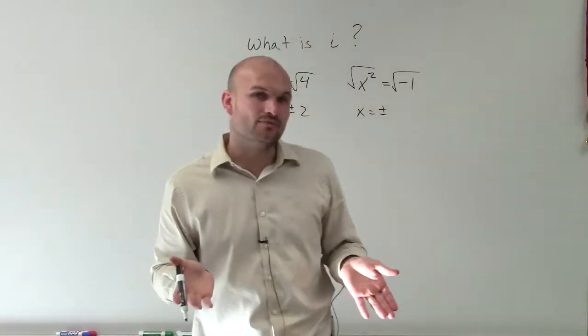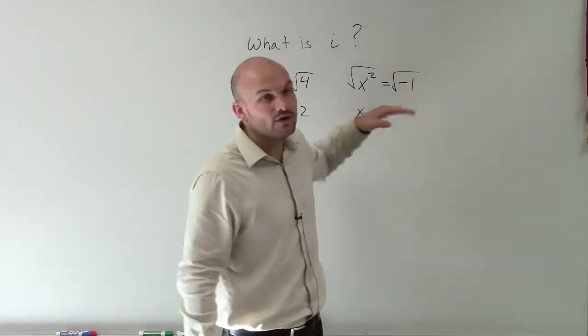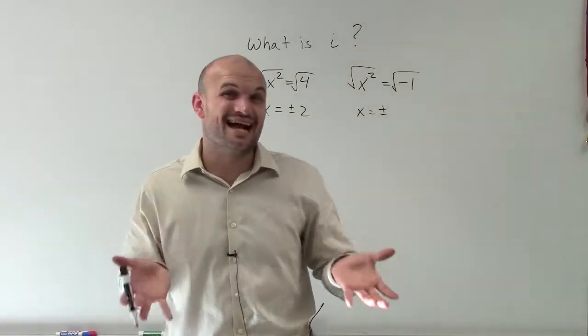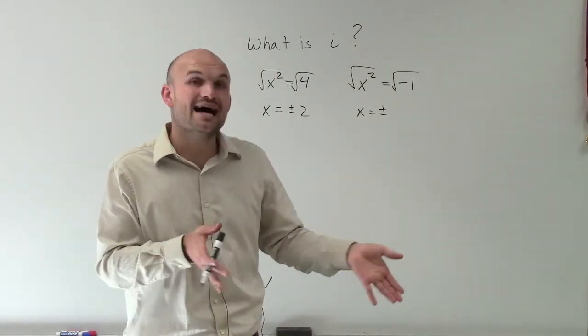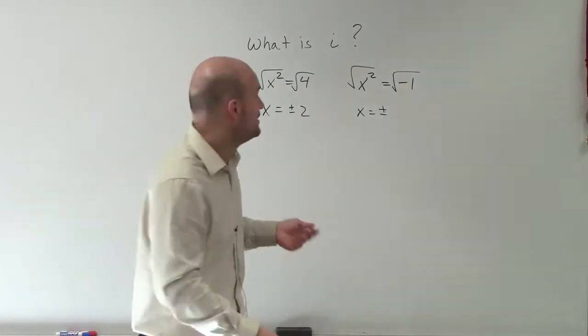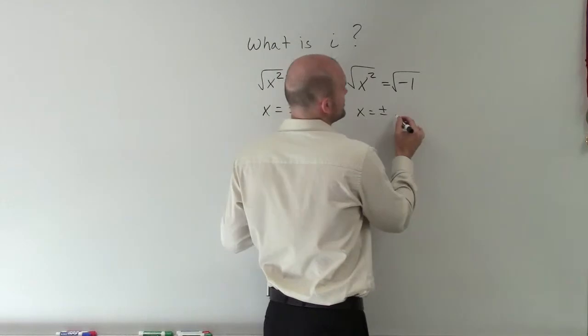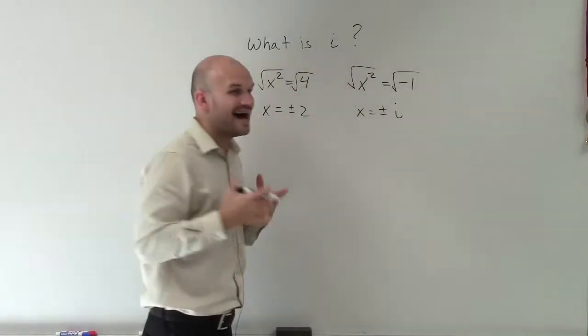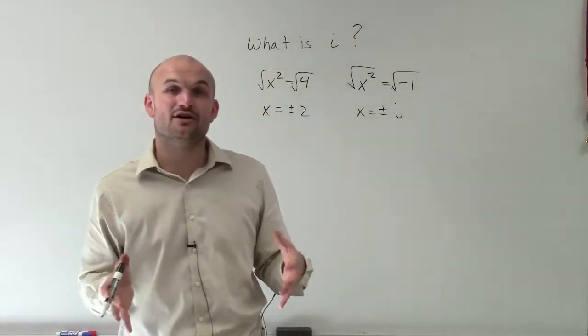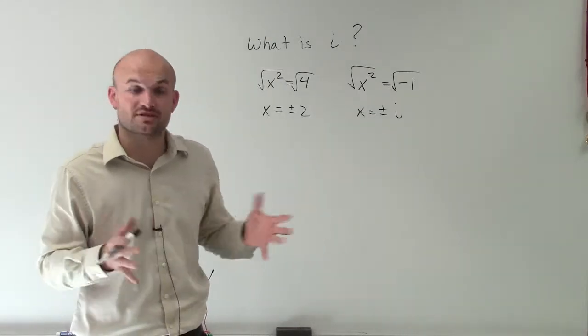However, we have a problem when we come to this, because we know that there's not any two numbers that are exactly the same with the same sign, positive or negative, that's going to multiply to give us negative 1. So therefore, what we do is we introduce i. And i is going to represent this imaginary unit, which we're going to be in our complex number system.